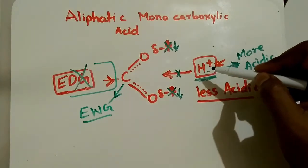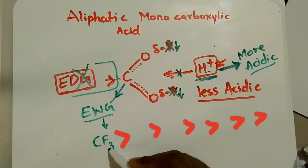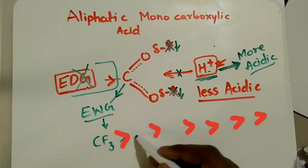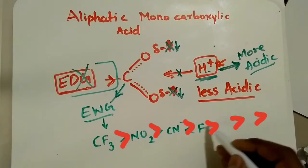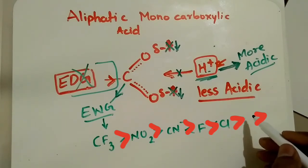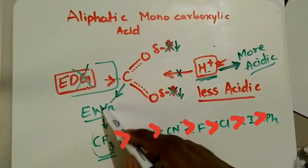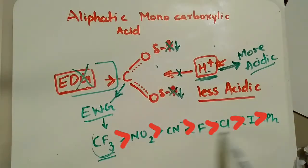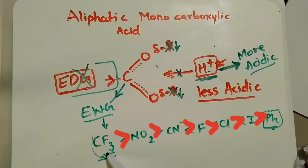Some electron withdrawing groups to remember: CF3 is a very strong electron withdrawing group, followed by NO2, then cyanide (CN), then chlorine (Cl), then F, then phenyl (Ph). The stronger the electron withdrawing group attached to the carboxylic acid, the more acidic the compound will be.